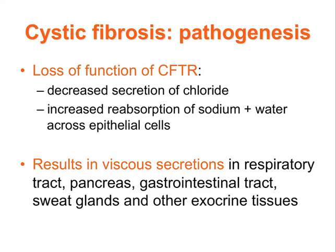The pathogenesis of cystic fibrosis involves the loss of function of the CFTR gene. This leads to decreased secretion of chloride and increased resorption of sodium and water across epithelial cells. This therefore results in viscous secretions in the respiratory tract, pancreas, gastrointestinal tract, sweat glands and other exocrine tissues.